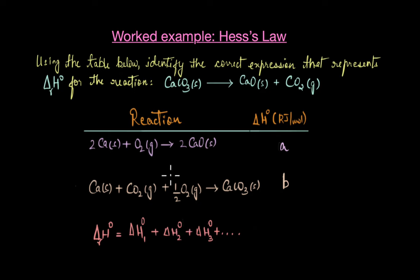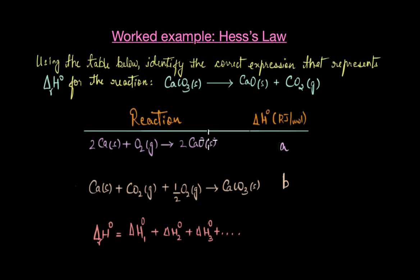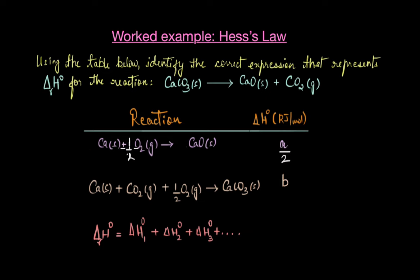Looking at the first equation: 2Ca + O₂ → 2CaO. Comparing with the desired equation, both have calcium oxide on the product side, but here we have two moles whereas in the desired reaction we only need one mole. So we divide the entire equation by two. Remember, whenever we multiply or divide an equation by a factor, we must make the corresponding change to the ΔH° value. Dividing by two gives Ca + ½O₂ → CaO, and ΔH° becomes a/2.